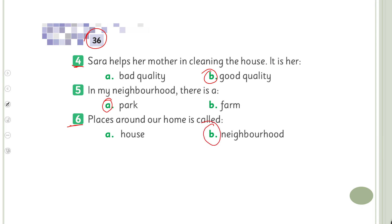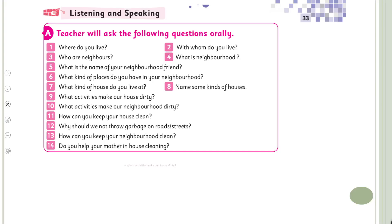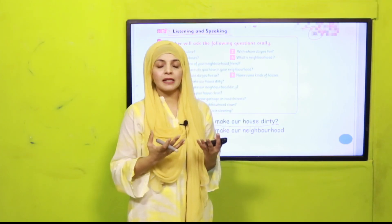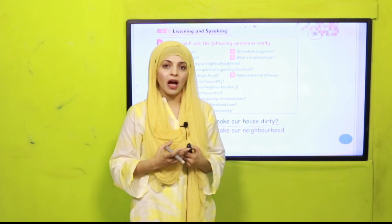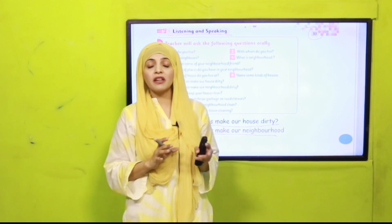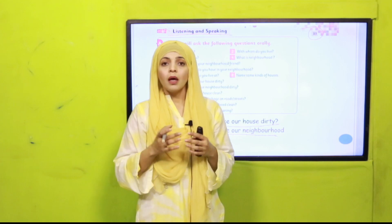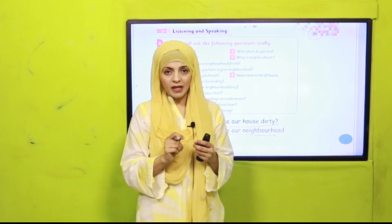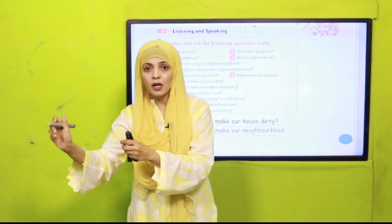Number 6: 'Places around our home are called house or neighborhood?' — Neighborhood. I hope everybody has completed these pages. Now on page number 33 there are listening and speaking questions which we do as assessment. Today we will do questions 10 and 11. 'What activities make our house dirty?' — Not putting things in the right place and throwing trash here and there makes our house dirty. 'What activities make our neighborhood dirty?' — You can see different dustbins in your neighborhood, but still the neighborhood is dirty — that is why we must put garbage into the dustbin.